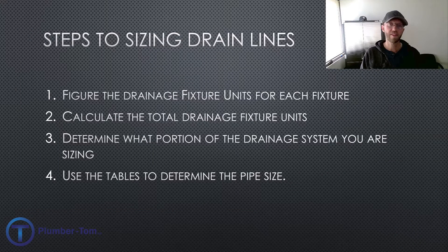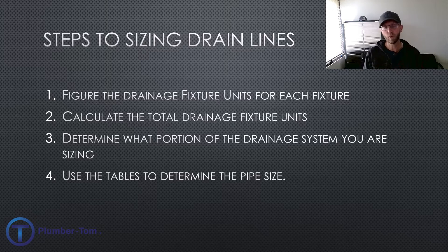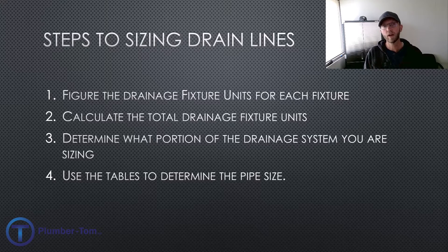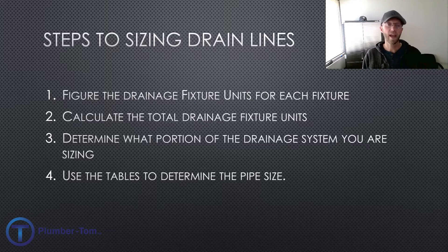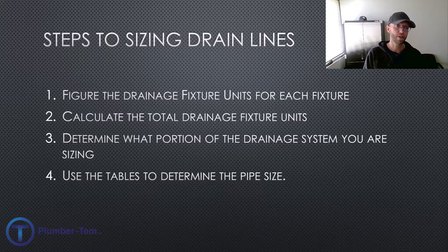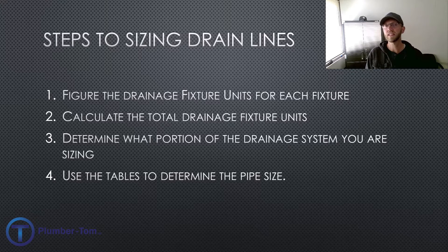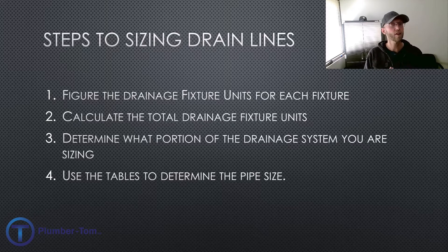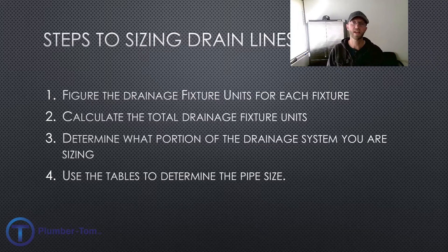Now that you're familiar with table 709.1, let's go on to the actual process for sizing drains. It's basically four steps. Step one: figure the drainage fixture units for each fixture across the portion of the building you are sizing. Step two: calculate the total drainage fixture units by adding those all up. Step three: determine what portion of the drainage system you are sizing — is this a horizontal branch, a stack, or a building drain or building sewer? Step four: use the tables to determine the pipe size. Let's go through an example.